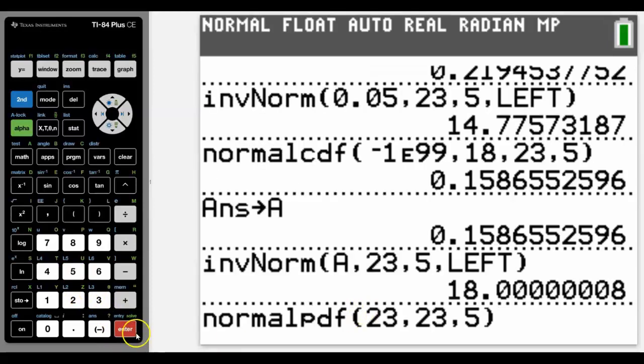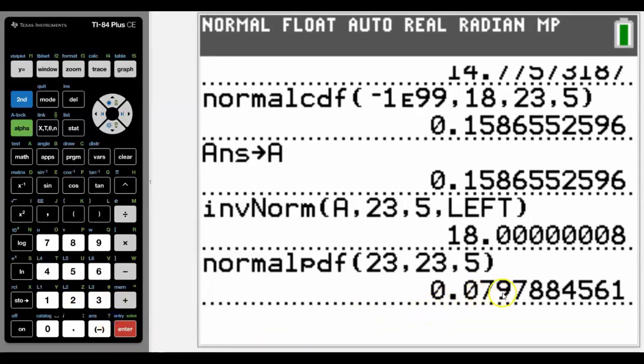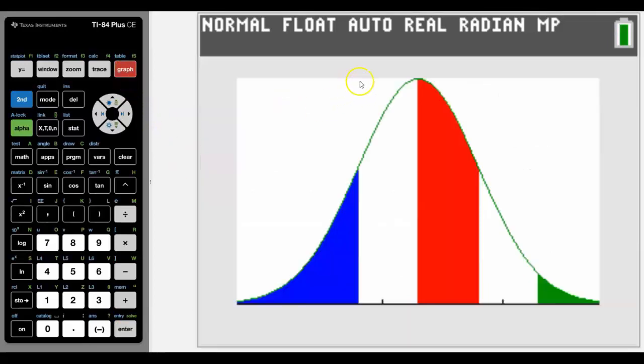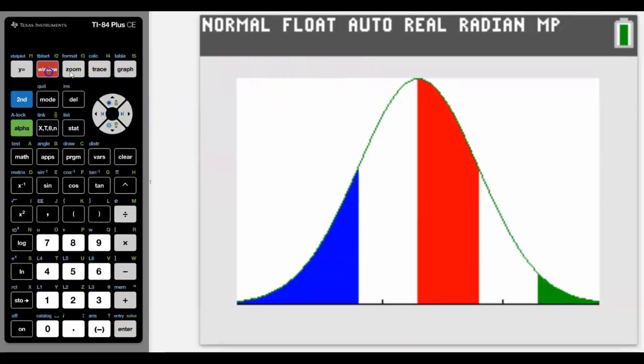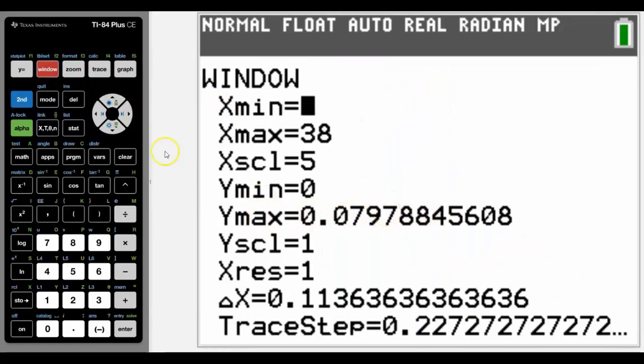So what it's going to tell me is that the height should be 0.0797. So the height here should be 0.0797. And we can see from our window that's the number that I'm using.